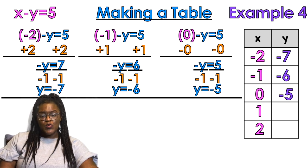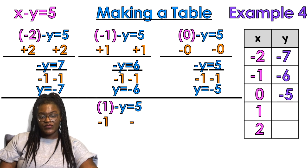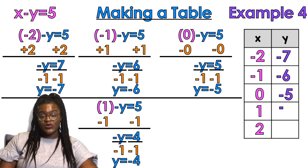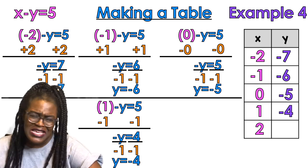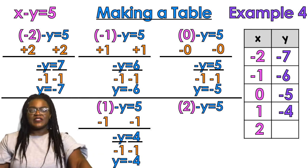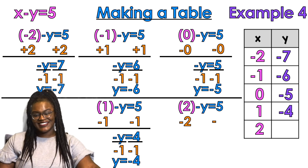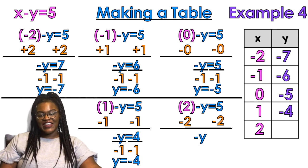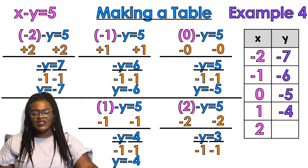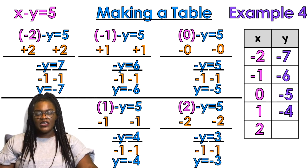Two more x values: 1 minus y equals 5 — subtract 1 from both sides — negative y equals 4 — divide by negative 1 — y equals negative 4. And last but not least, 2 minus y equals 5 — minus 2 on both sides — negative y equals 3 — divide by negative 1 — y equals negative 3.